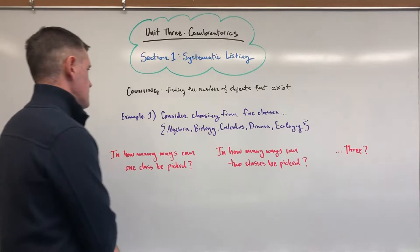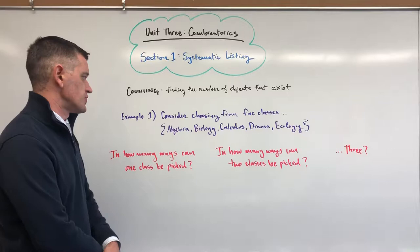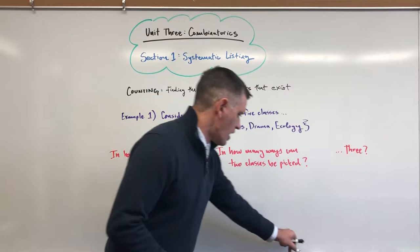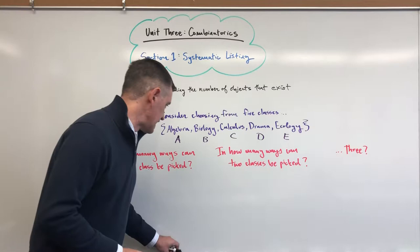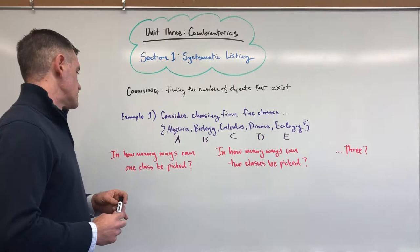So let's jump into example one and see what we're doing. We're considering, as we often do, choosing from five class options: Algebra, Biology, Calculus, Drama, and Ecology are the options chosen. So that we can instead of writing them out over and over again, use our alphabetical initials A, B, C, D, and E. And we're going to be looking at three different questions.